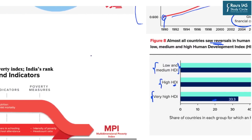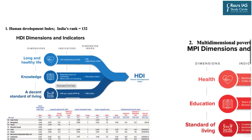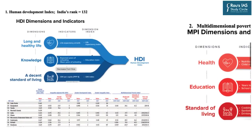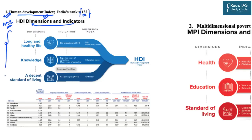Now we will look at certain composite indexes published in the Human Development Report by UNDP. The first, as seen in the headline, is the Human Development Index, popularly known as HDI. As far as this index is concerned, India has been ranked 132 out of 191 countries. From the prelims perspective, the ranking and the indicators used to calculate any index are important.